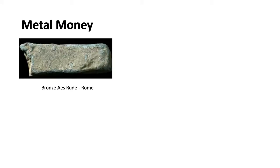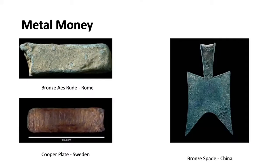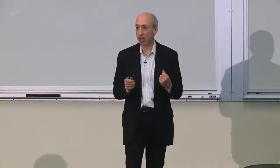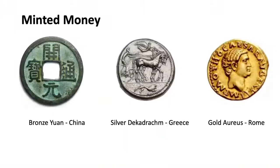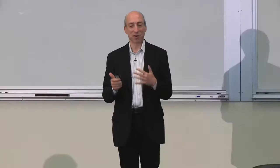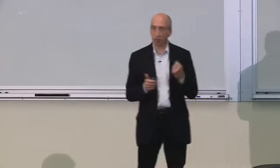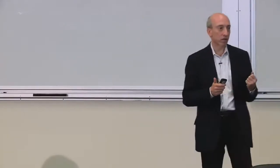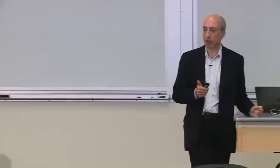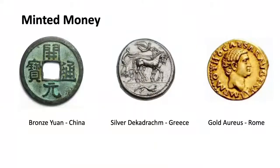We moved to metal money. At first it wasn't really stamped — it was just heavy, hard to quarry. Bronze in Rome, some in China, in Sweden these were starting to be stamped by the official sector. Then we had minted money starting somewhere around 2,500 years ago. There are debates as to whether it started in Greece or in China, but an official emblem was placed upon a scarce resource.